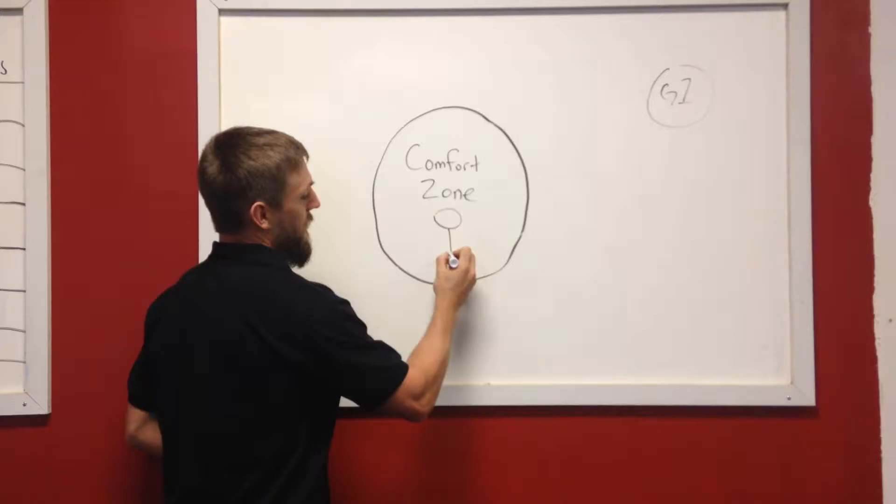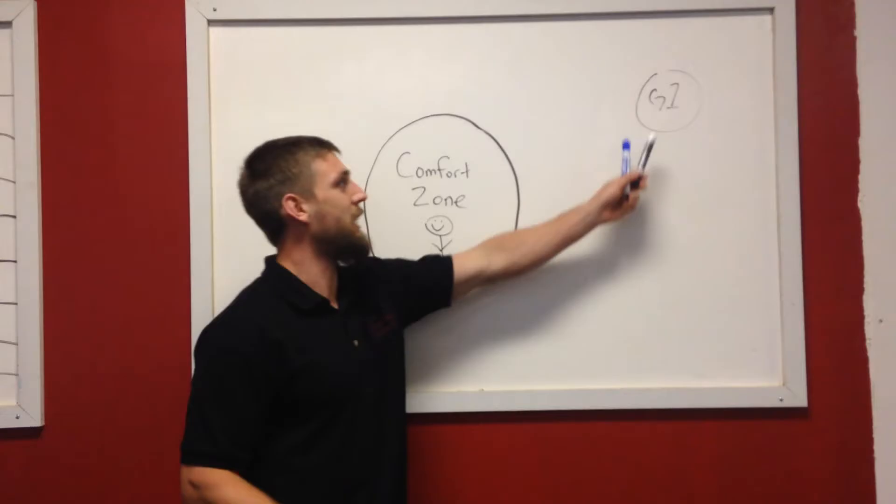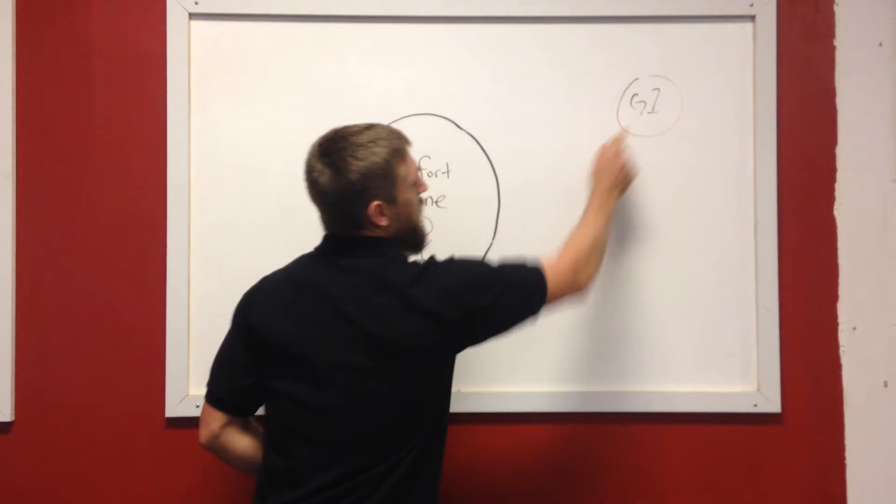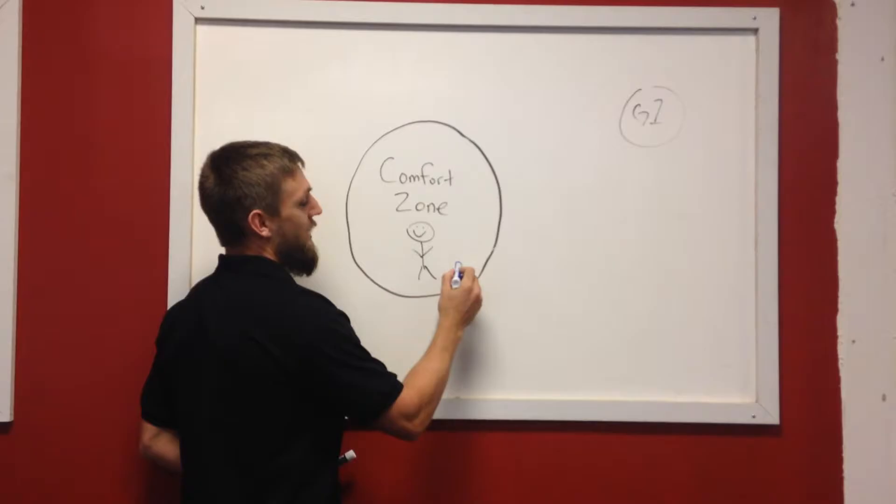So right now let's just say we're right here in our comfort zone, we're happy with what we're doing but we have this thing that's in the back of our mind, something that we've set that we want to accomplish. And so we have to get from here to here. So how do we do that?